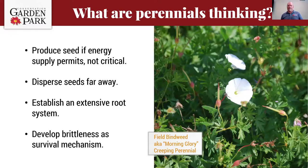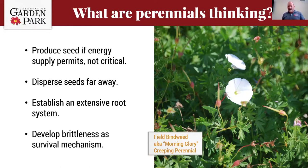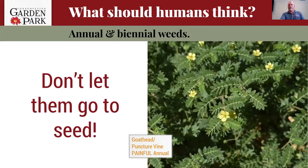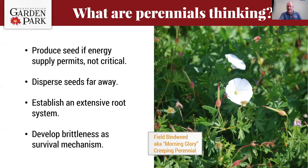Perennials' seed dispersal methods are usually much different from annuals or biennials — think of dandelion with its little parachute that carries seeds quite a ways. Their real job is developing an extensive root system, and they tend to develop brittleness. Brittleness allows roots to break off if somebody's tugging on them so the roots remain in the ground and the plant can just develop a new shoot from whatever remains.